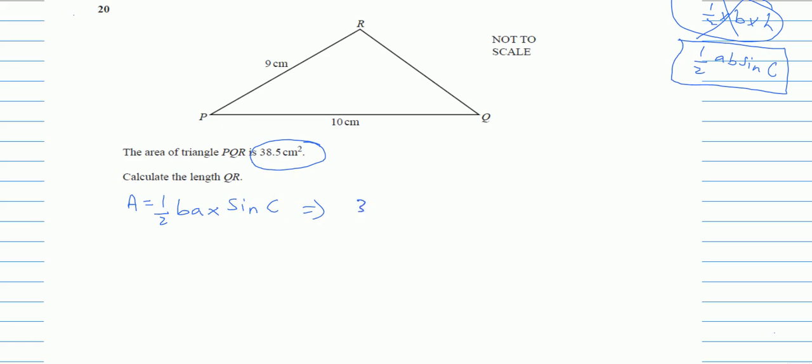a can be 9 or b can be 9, that doesn't matter, times sin C which is the angle between the a and b I have chosen, which is P. So that is my sin P. Now I have to solve this.